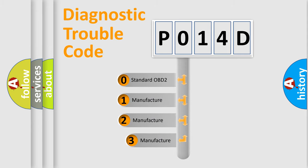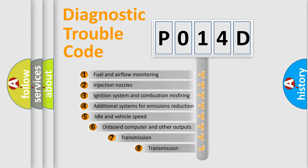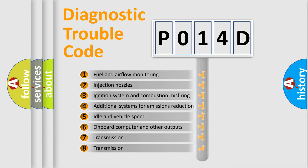If the second character is expressed as zero, it is a standardized error. In the case of numbers 1, 2, or 3, it is a more precise expression of the car-specific error.